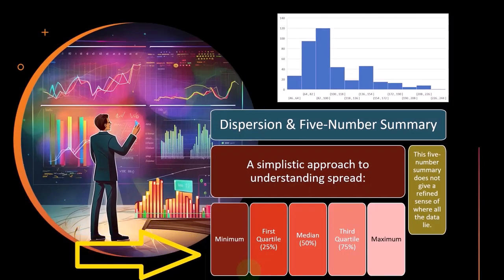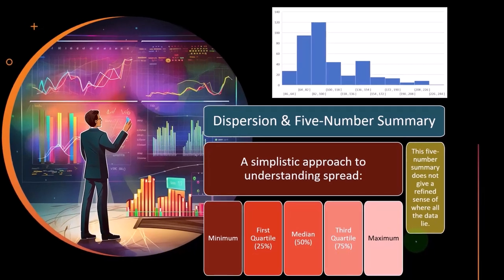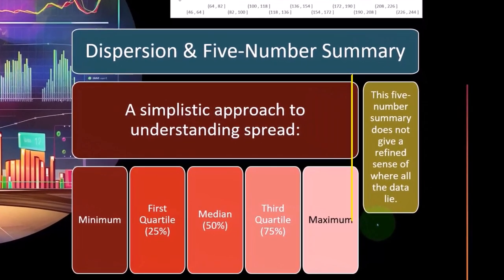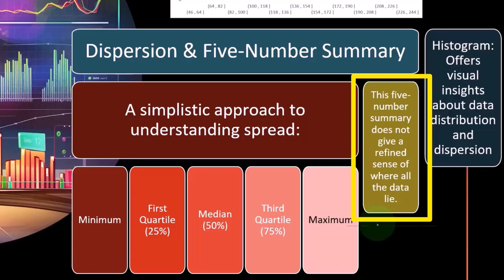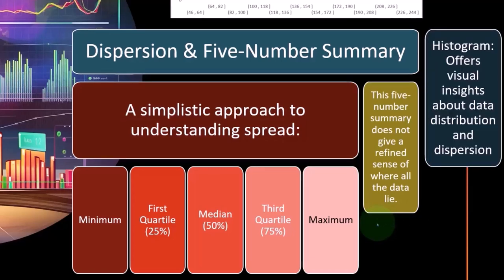So we want to add another numerical representation to it, which is going to be the variance and the standard deviation ultimately. So this five-number summary does not give a refined sense of where all the data lies. It's a good summary, a good tool, but we probably want more tools to get into that spread of the data.